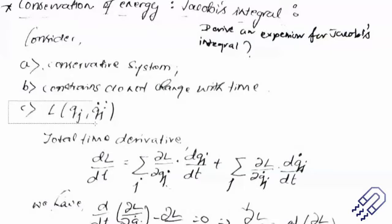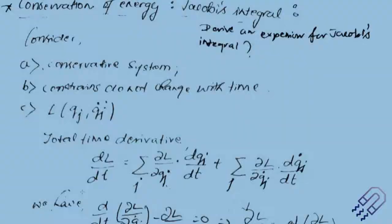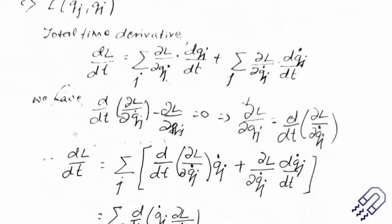We use Lagrange's equation of motion: d/dt of (del L / del q_j dot) minus del L / del q_j equals zero. It is important to look carefully at how partial derivatives are represented here. We are not taking del L alone; we are taking the time derivative, so it is del L by del t, which is why the dt appears. This is different from the previous section where we only took partial derivatives with respect to variables.